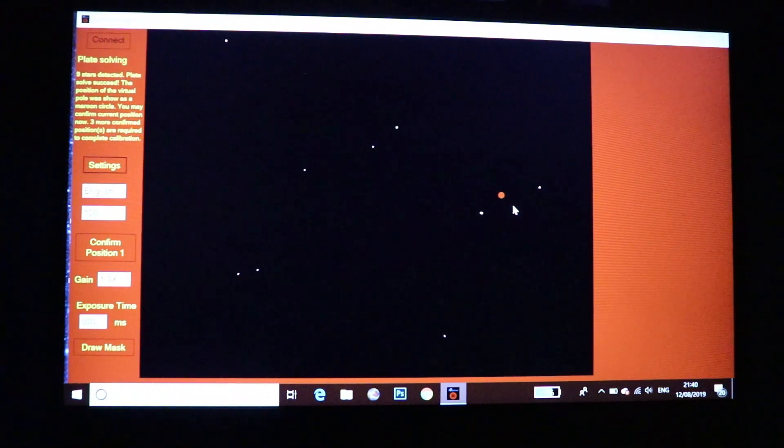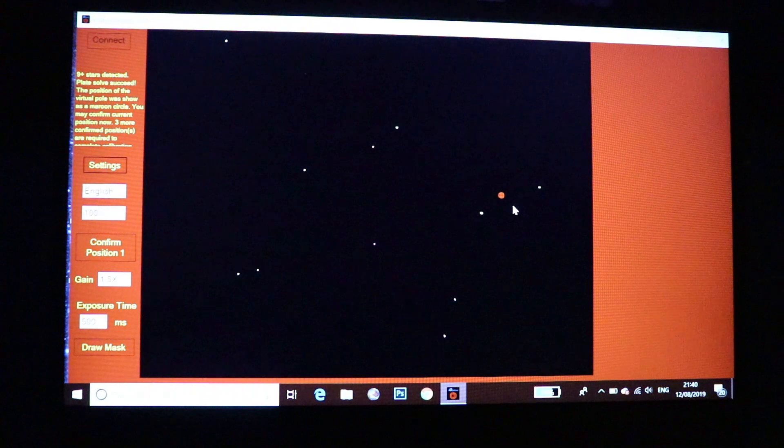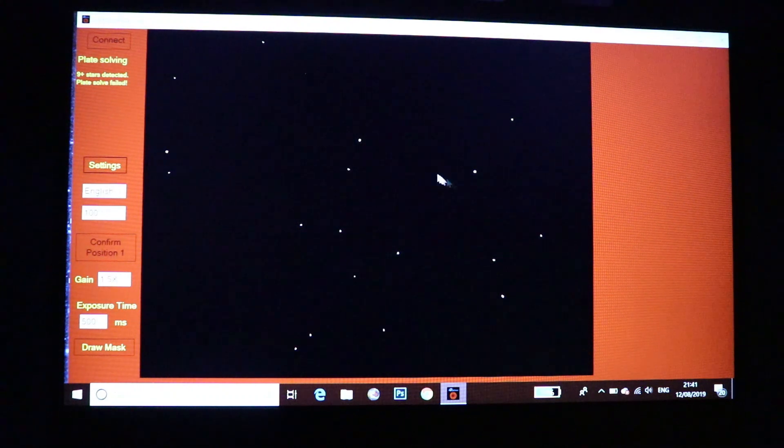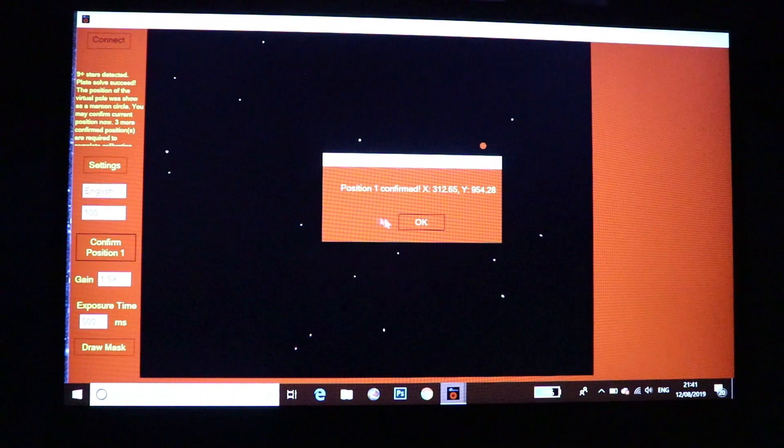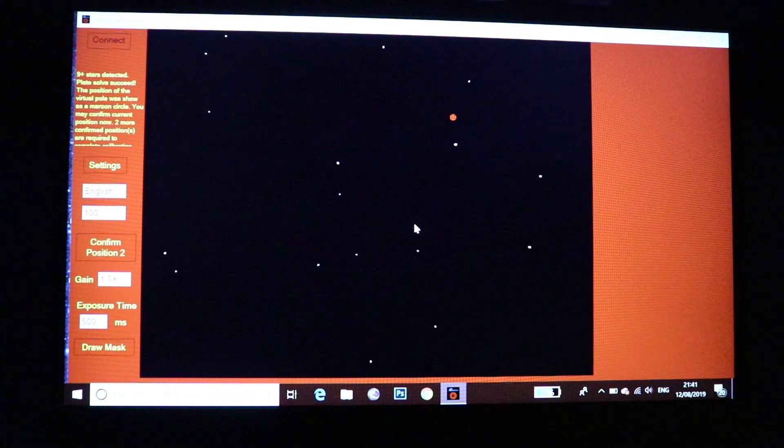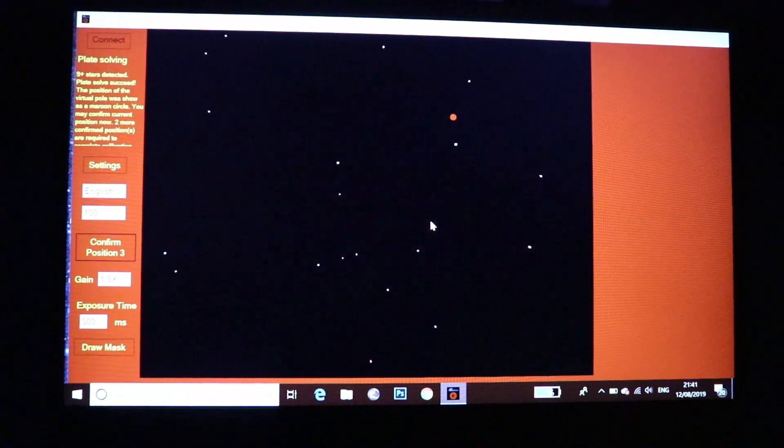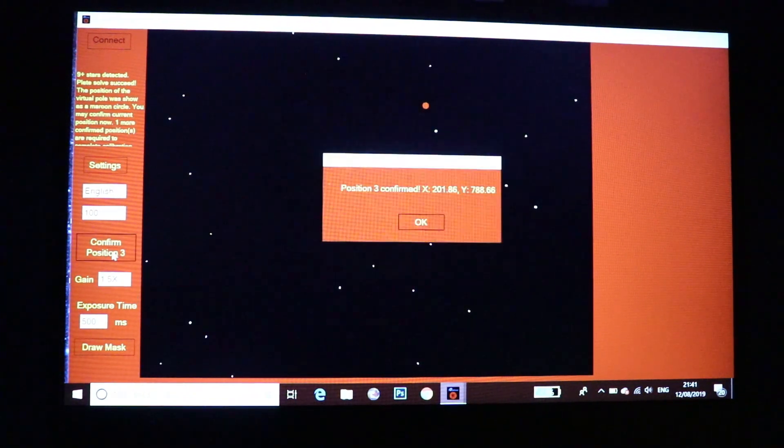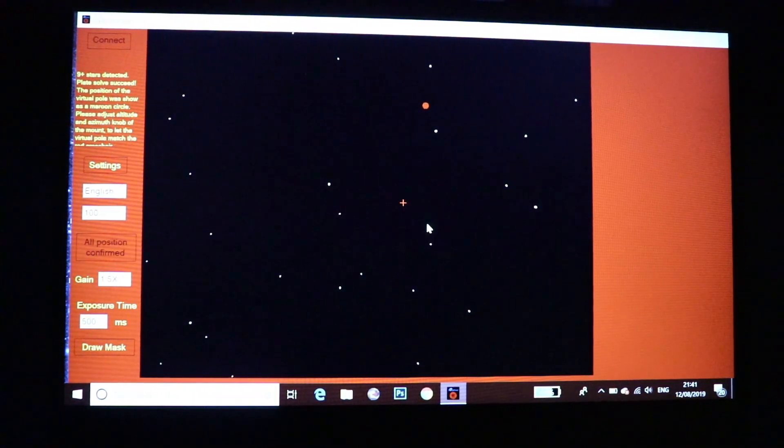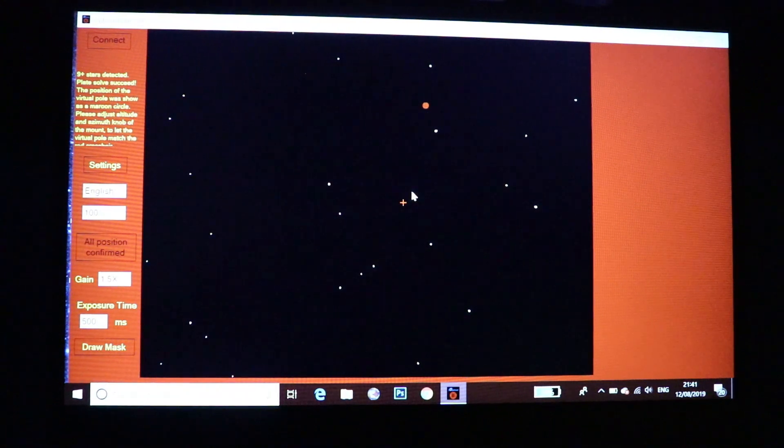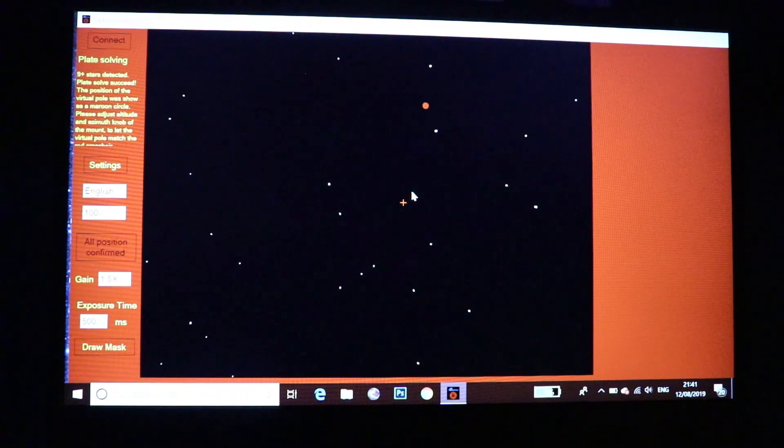So I now need to establish the rotational axis of my mount and to do that I need to rotate the RA axis. I'm going to rotate it a touch. And I'm going to click confirm position one. And then I'm going to rotate it some more. And I'm going to click confirm position two. And then I'm going to rotate it again. Confirm position three. So that cross is where my mount is currently pointing. And I need to overlay that cross on that red circle. Now that procedure of just rotating the mount, as long as you don't take the iPolar off the mount you only have to do that once.